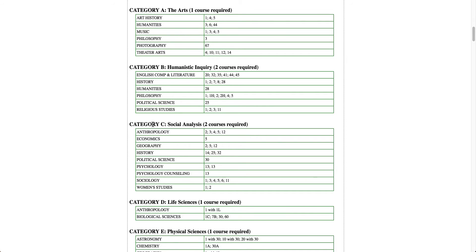For Category C, choose two courses — I did anthropology and psychology. Anthropology was at Chabot College because the professor at Las Positas for the same class was apparently really hard. So I drove to the different college for the same class but with a much easier teacher, and I got an A. For psychology, I took an online course — I just did it at home.